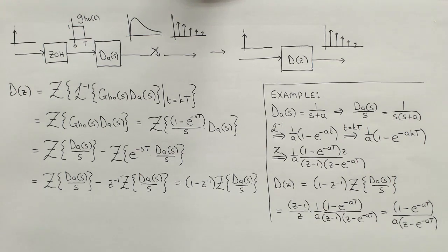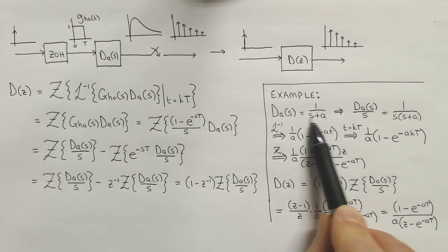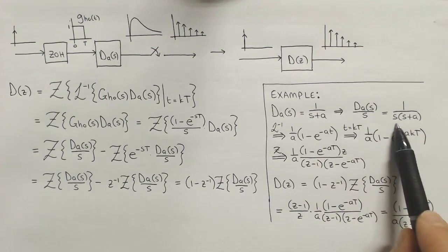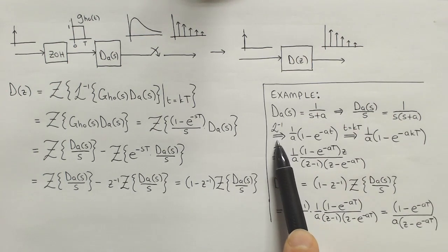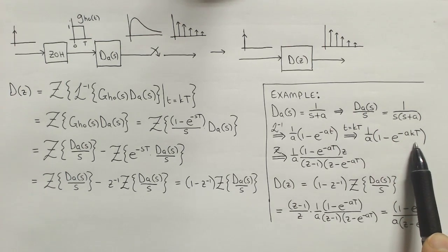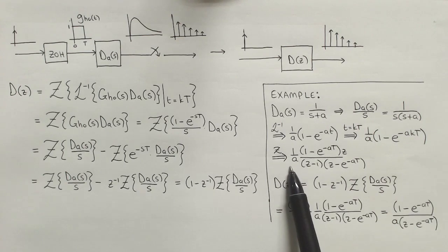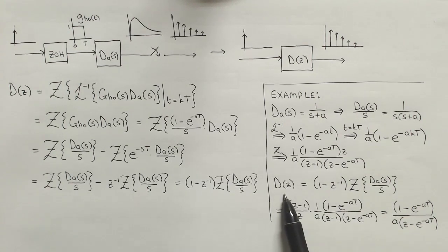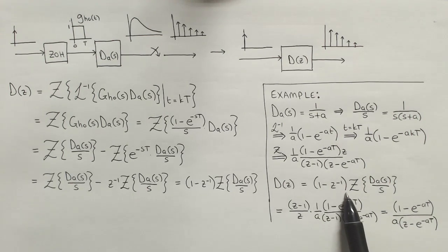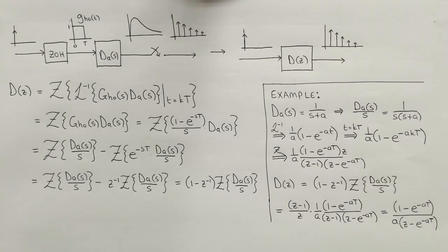To illustrate this discretization method, let's work through the same simple example where the continuous controller is given by 1 over s plus a. From Laplace transform tables we read off the inverse Laplace transform of the relevant expression, which is then sampled. Using Z-transform tables we calculate the Z-transform. The discrete controller is then given by 1 minus z to the minus 1 times that, and after some simplifications we get the resulting transfer function. We have now looked at two discretization methods to obtain a discrete controller that behaves similarly to a designed continuous controller. In the next video we will look at two other discretization methods.